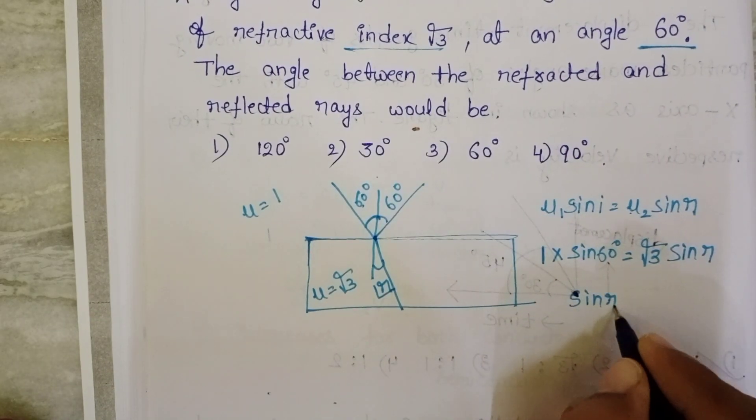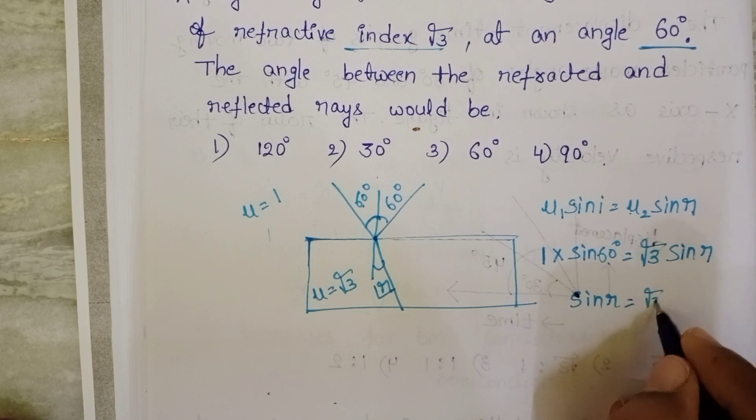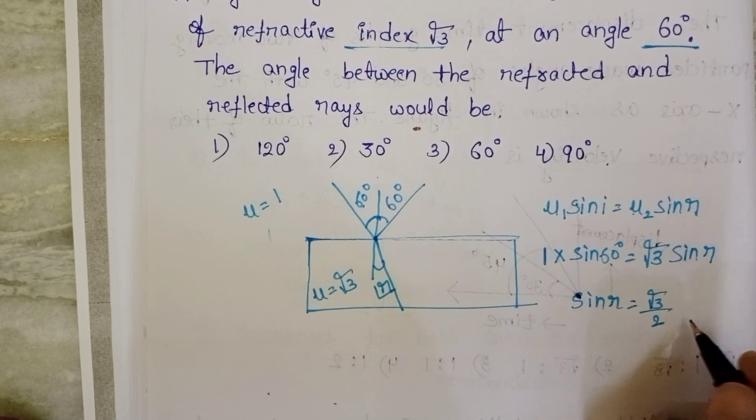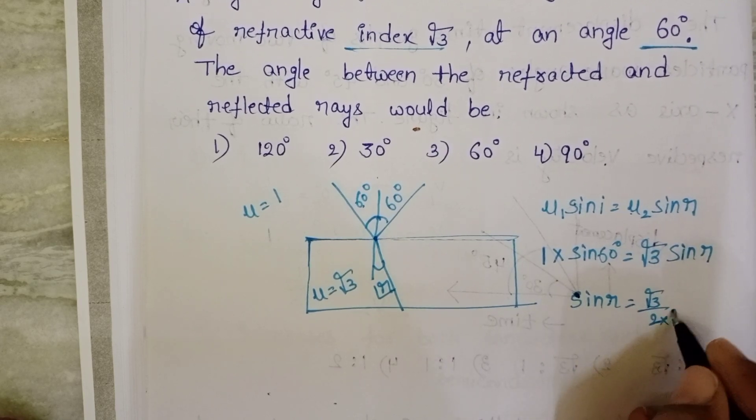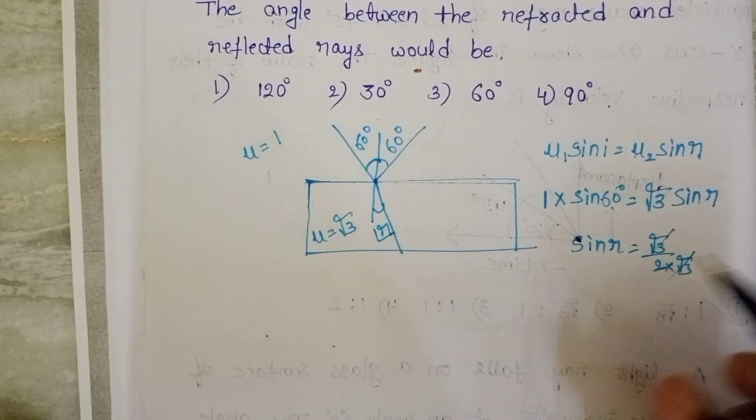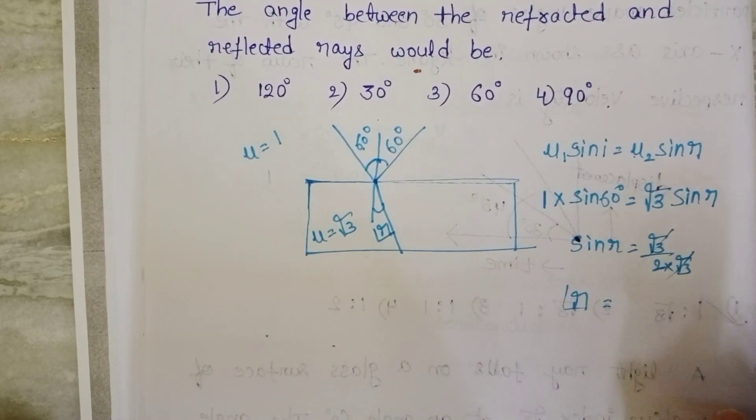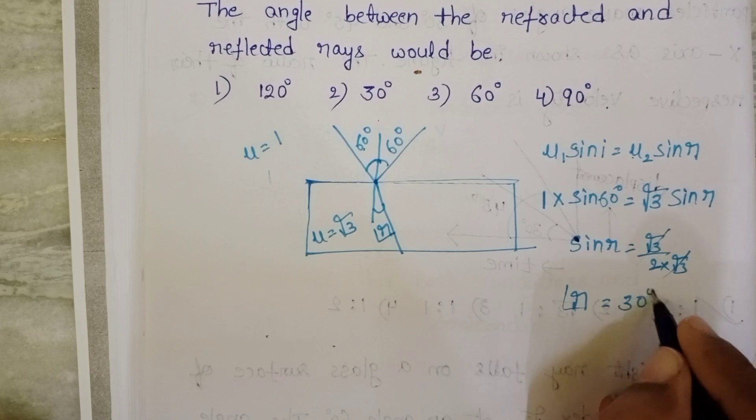Then sin r equals sin 60, root 3 by 2 by root 3. So root 3 gets cancelled, 1 by 2, then angle of refraction equals 30 degrees.